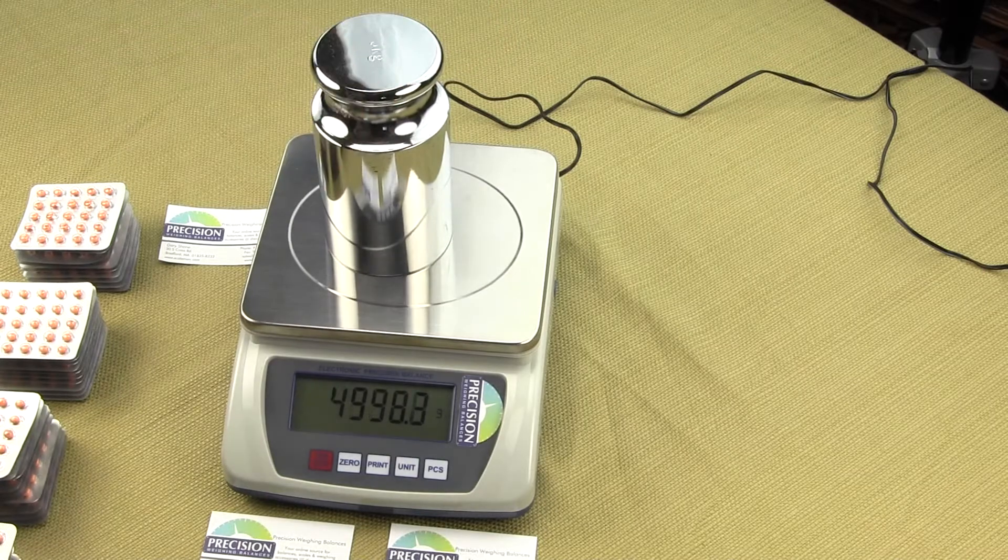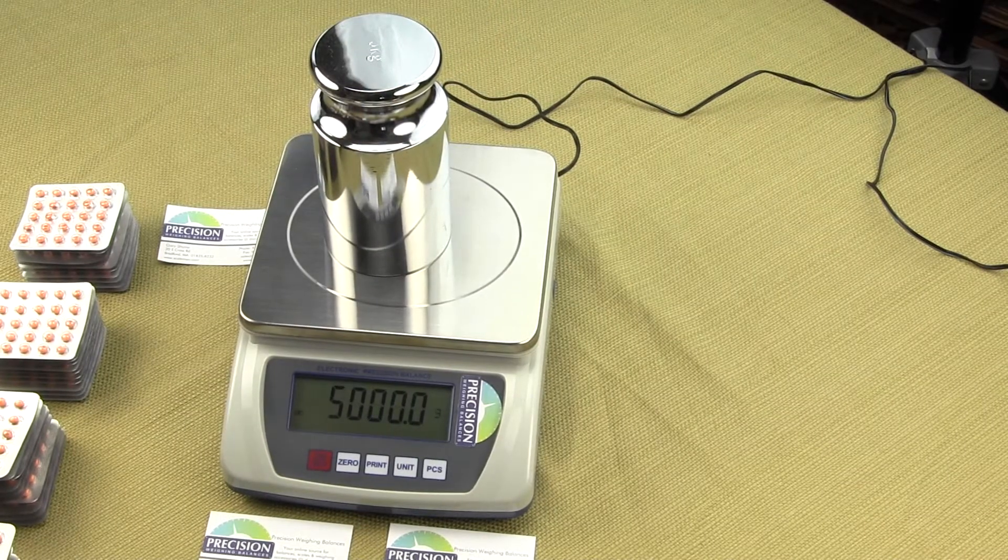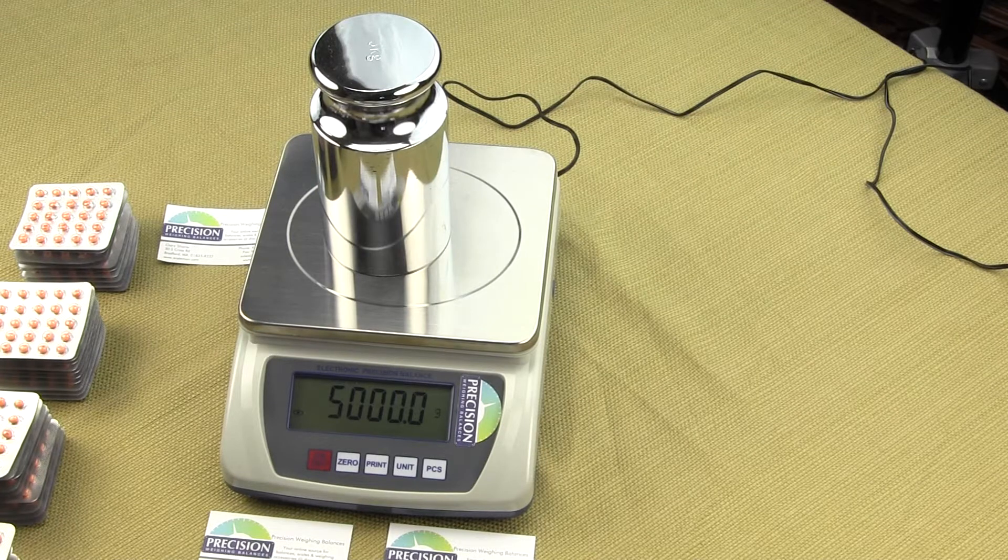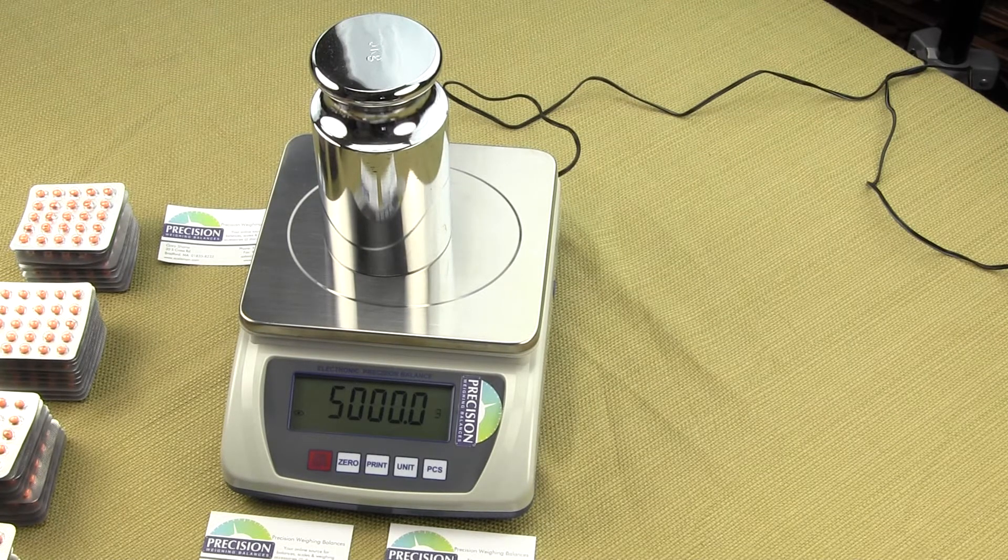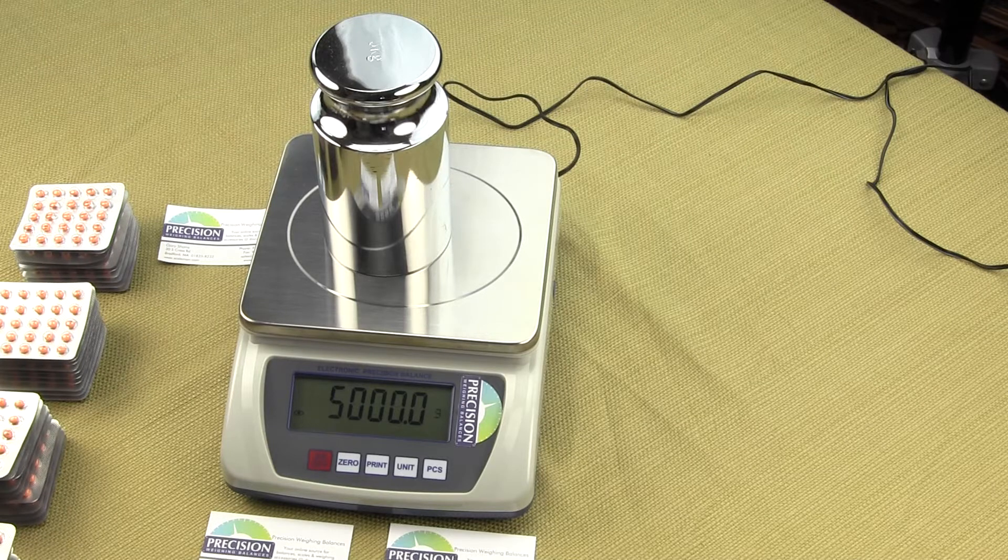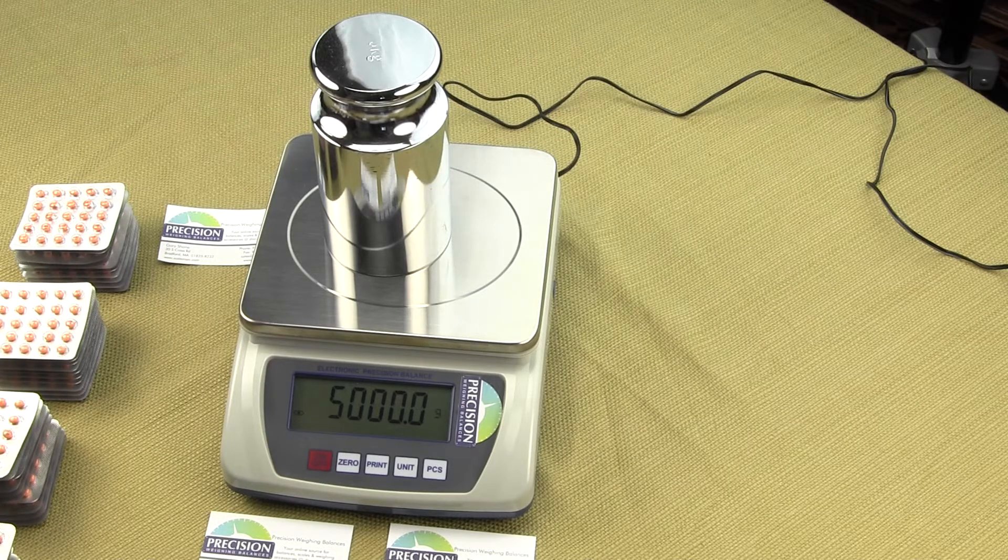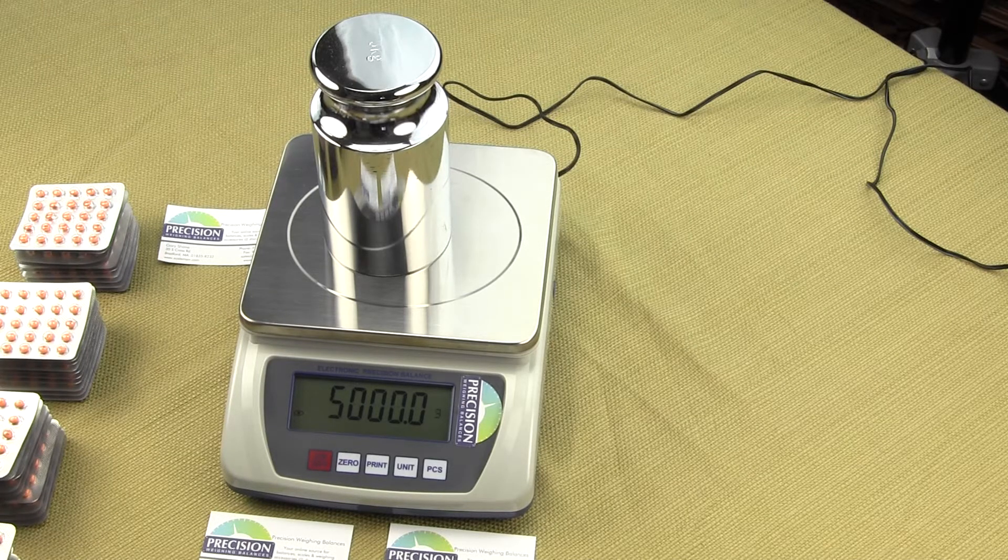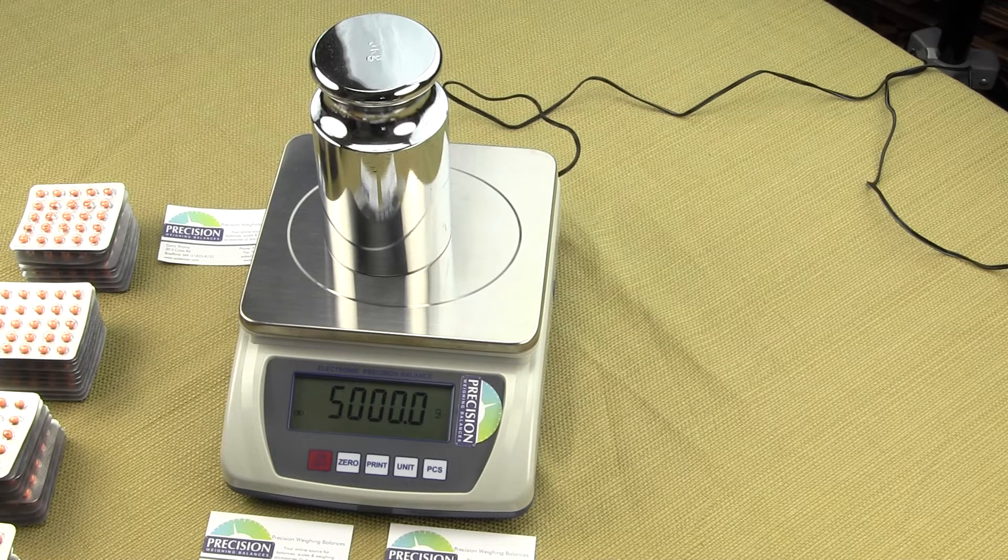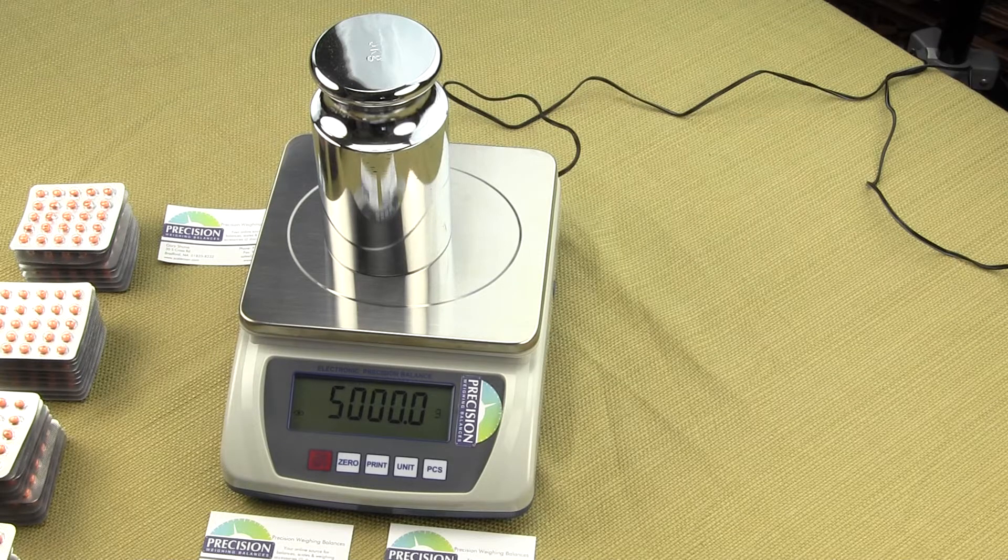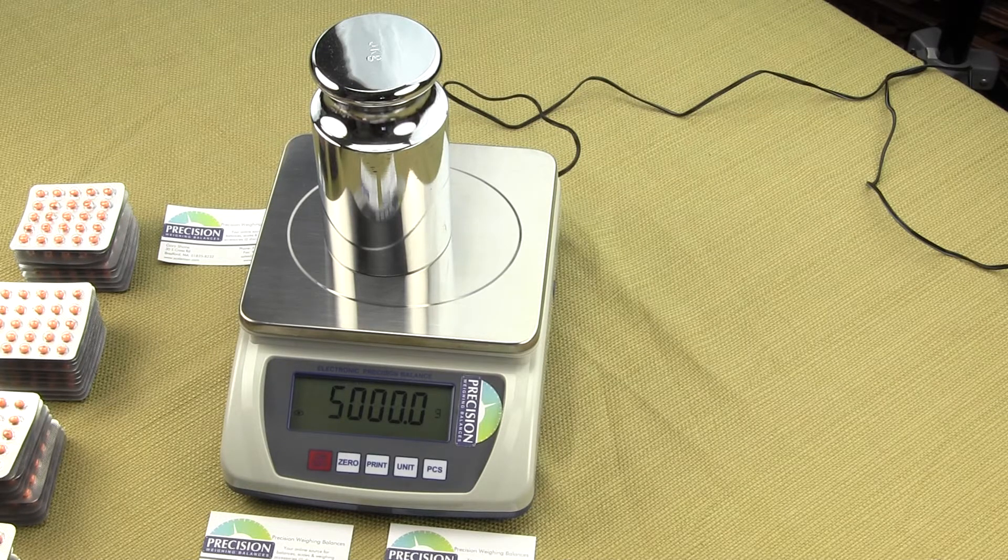There are also two other models in this series: the EPB6K and EPB3K, offering 6,000 and 3,000 grams weighing capacity respectively. All three models have readability to a tenth of a gram. This demonstration on the EPB10K would be the exact same for the 3K or 6K.